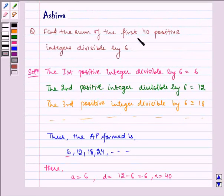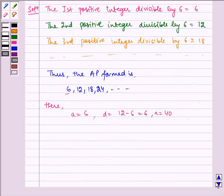Since we have to find the sum of first 40 positive integers divisible by 6, we use the formula S_n = n/2[2a + (n-1)d].